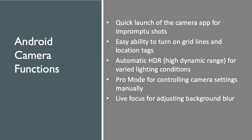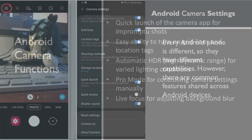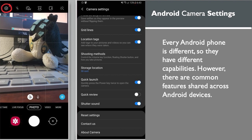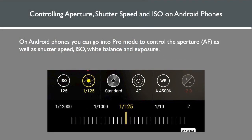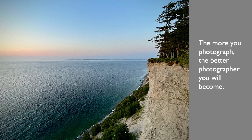Android mobile devices are very different from one another, but most include key functions: quick launch of the camera app for impromptu photography, easy ability to turn on grid lines and location tags, automatic high dynamic range for varied lighting conditions, Pro Mode for controlling camera settings manually, and Live Focus for adjusting background blur. Pro Mode is best for Android users who want full control of their phone's camera settings, allowing you to manually adjust capture settings including ISO, aperture, color, focus, and temperature, as well as shutter speed, white balance, and exposure. The more you photograph, the better photographer you'll become.